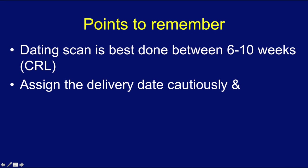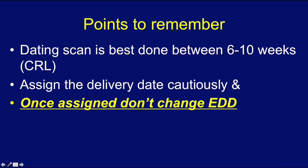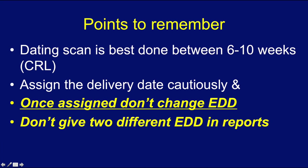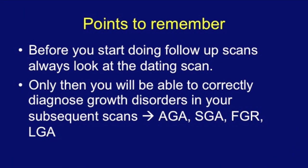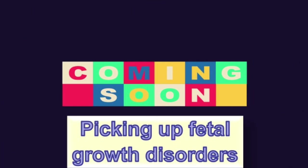Always remember: the dating scan is best done between 6 to 10 weeks using CRL. Assign the delivery date cautiously and once assigned, do not change the EDD in subsequent reports. Do not give two different EDDs. Before starting follow-up scans, always review the dating scan — only then can you correctly diagnose growth disorders. The terms AGA, SGA, FGR, and LGA will be better understood once the concept of dating scan and correct EDD assignment is clear. In the next video, we will look at how to identify fetal growth disorders.